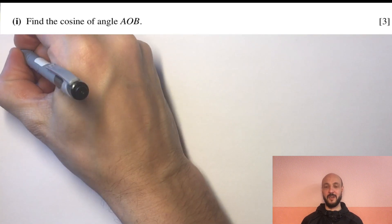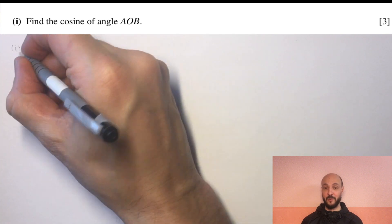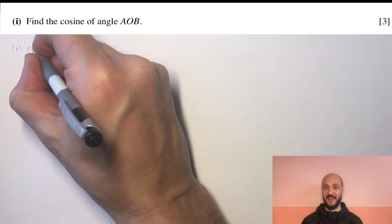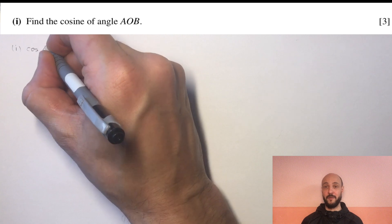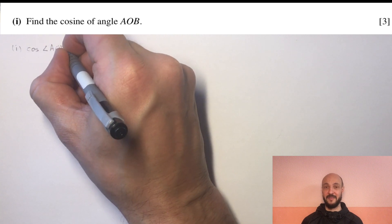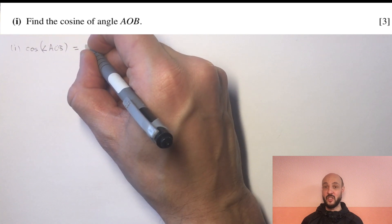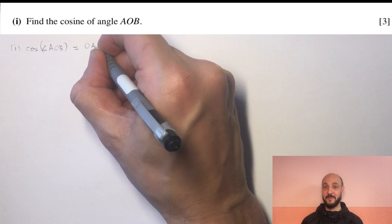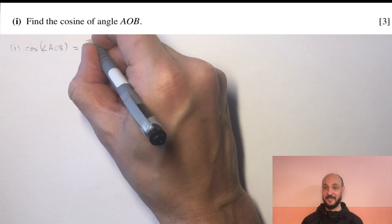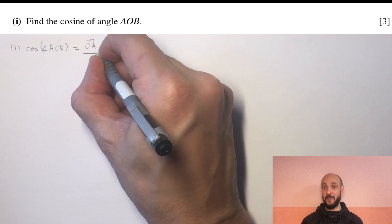To start off we're going to have to use the dot product formula to find the cosine of angle AOB. The dot product formula tells us that the cosine of angle AOB equals OA dot OB divided by the magnitude of OA times by the magnitude of OB.